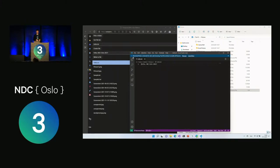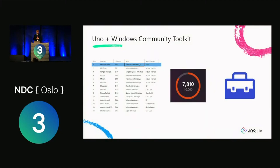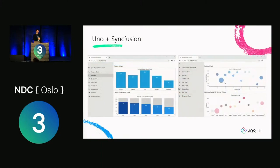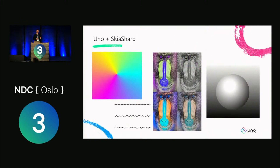Any platform is only as healthy as its ecosystem, and Uno Platform has some nice partnerships. With the Windows Community Toolkit and XAML LLAMA there are many controls supported in Uno Platform by simply compiling those libraries against it. There's a toolkit from Syncfusion for charting applications and the same from Infragistics. You can also use SkiaSharp in Uno Platform applications for 2D graphics rendering — including hardware-accelerated graphics — for very performant animations in the browser or on mobile devices.